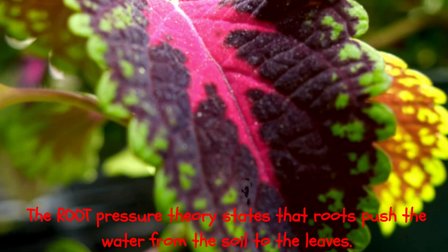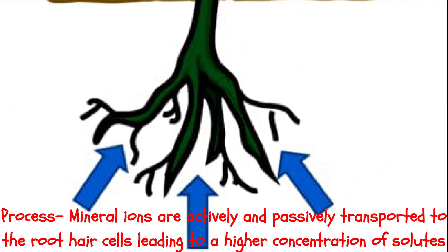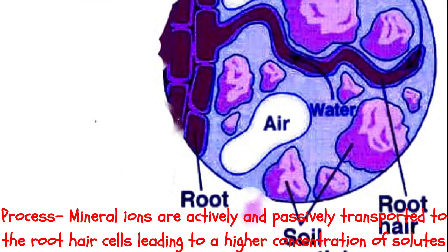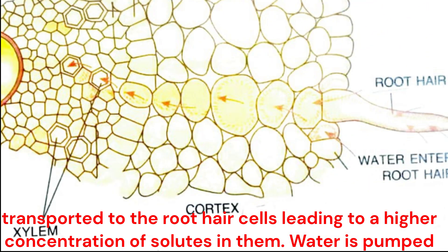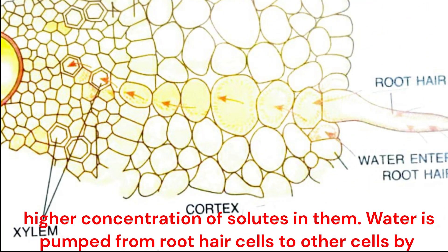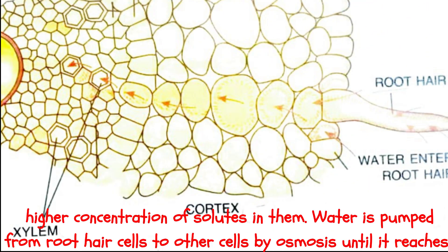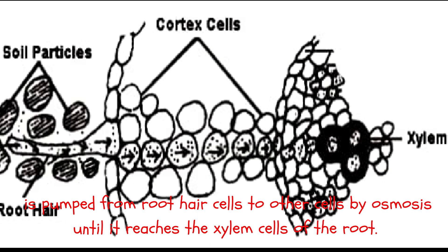2. The root pressure theory states that roots push the water from the soil to the leaves. Process: mineral ions are actively and passively transported to the root hair cells, leading to a higher concentration of solutes in them. Water is pumped from root hair cells to other cells by osmosis until it reaches the xylem cells of the root.